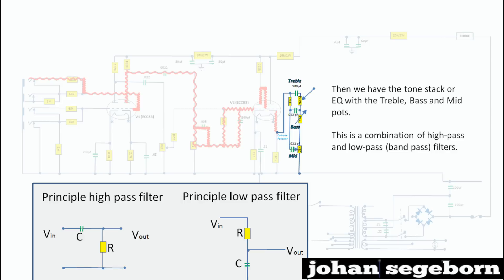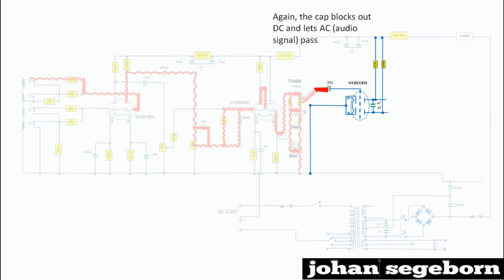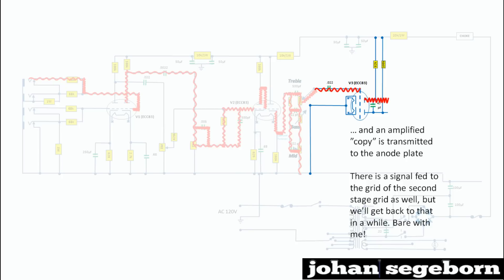Then, when we come to the tone stack, it's basically a circuit made up of high-pass and low-pass filters, basically a band pass filter. We pass another coupling cap to block DC and we feed the signal into the grid of the third pre-amp tube and get an amplified copy transmitted to the anode plate.